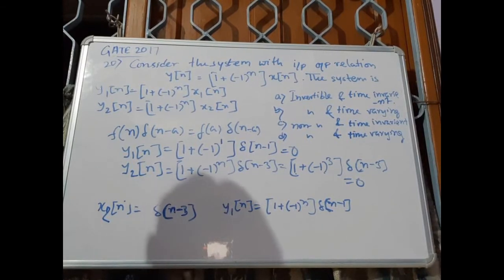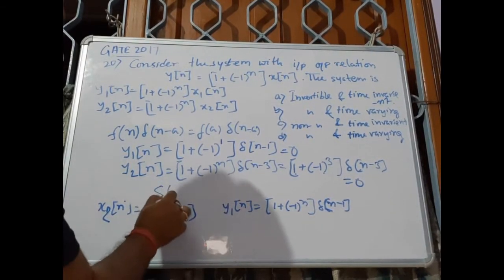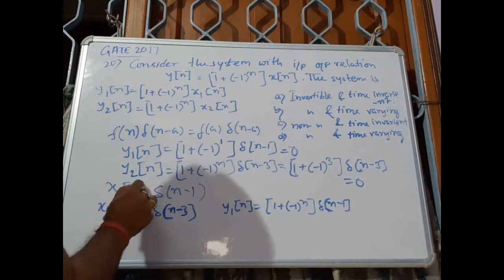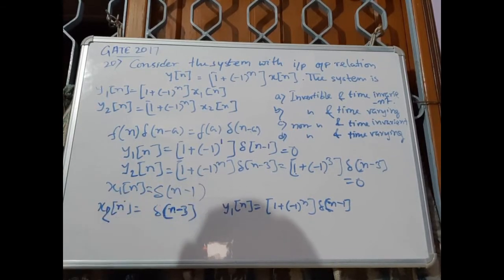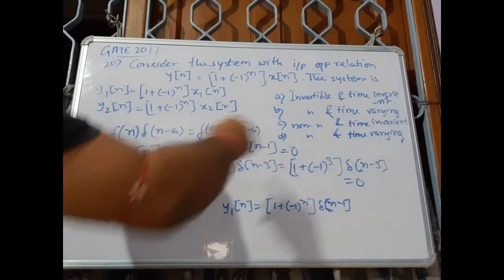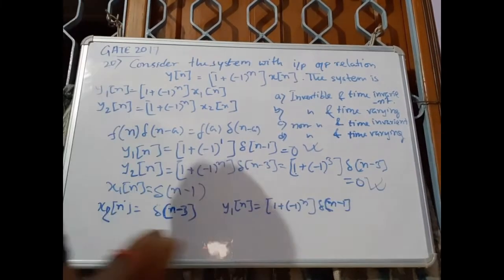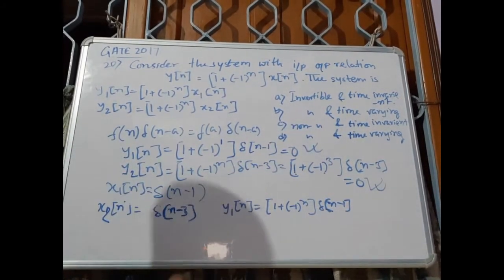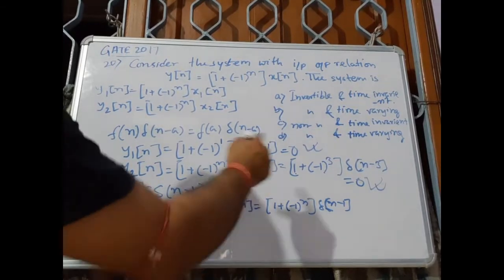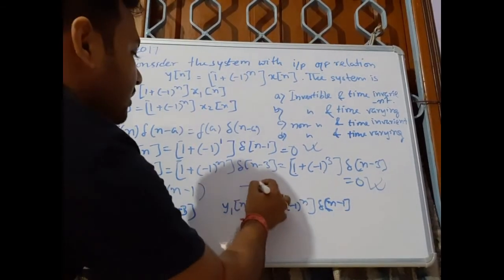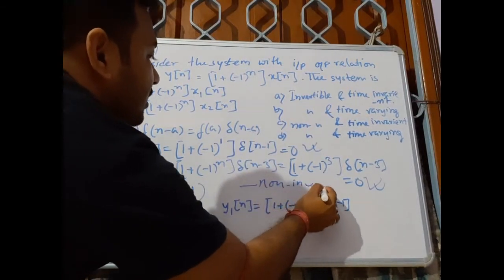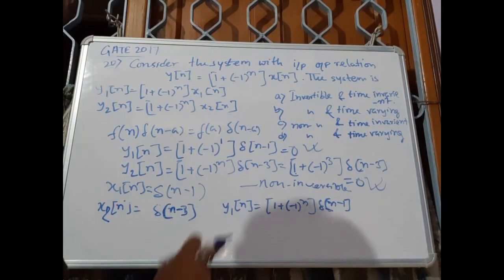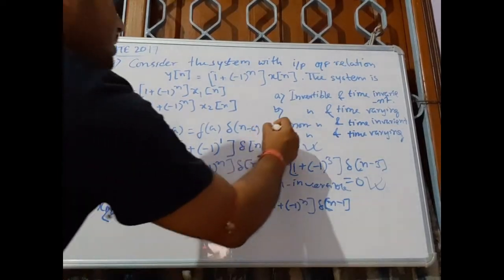For different inputs — delta[n - 1] for x1[n] and delta[n - 3] for x2[n] — we get the same output of 0. Similarly for delta[n - 5] and all odd-shifted deltas, the output equals 0. Therefore the system is non-invertible. The correct option is (d): non-invertible and time varying.